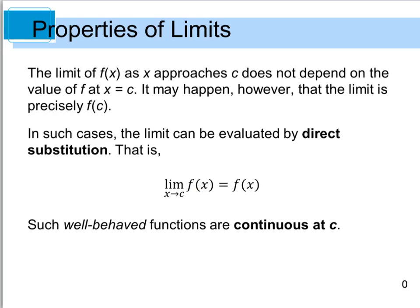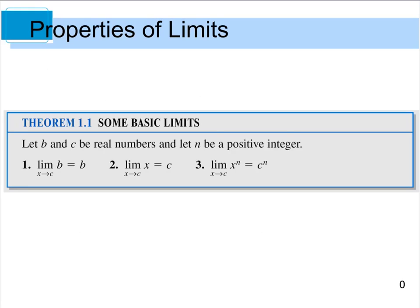We say that the limit can be evaluated by direct substitution just by plugging this value into this function. When we have something like this happen, we know that the function is continuous at that point C. Some of our basic limit theorems say that if B and C are real numbers and N is a positive integer, then the limit as X approaches C of some real number B is B itself. Likewise, the limit as X approaches C of X equals C, and the limit as X approaches C of X to the nth power equals C to the nth power — both due to direct substitution.